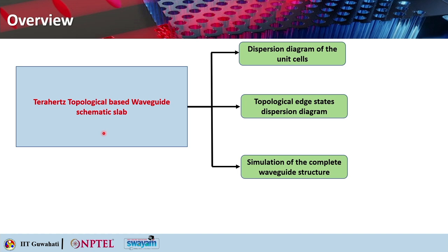Here we will mainly be focusing on three major aspects. The first one will be how to obtain the dispersion diagram for the unit cell, then how to obtain the topological edge states in the dispersion diagram, and finally we will go for the simulation of the complete waveguide structure. Realizing a topological based waveguide will basically require all these simulation steps, which are the basic requirements.